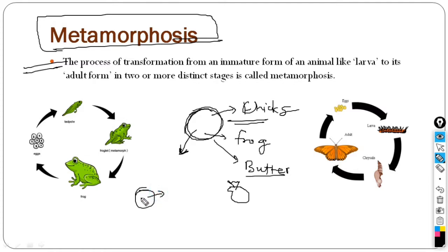When the chick comes, the chick also looks like a hen. The size is small, but they look similar. The adult and the young one, they look the same.